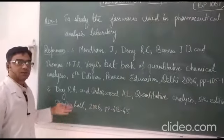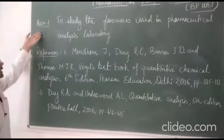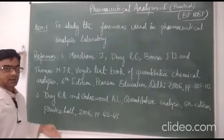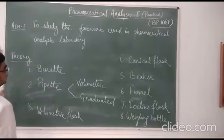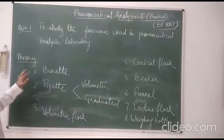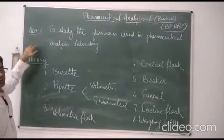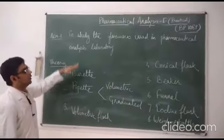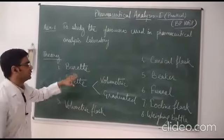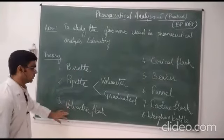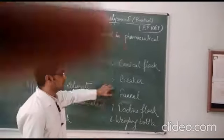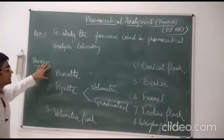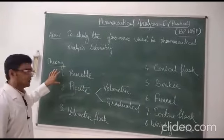After the references, we write a theory portion which we will discuss further. The theory covers all the glassware we have to use, such as the burette, pipette, volumetric flask, beaker, iodine flask, and wash bottle. I will discuss each one by one.